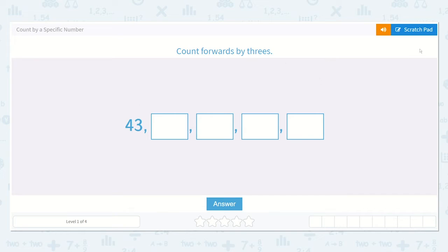count forward by threes. So we start at 43, and we're going to count forward by threes. So we're going to add three to this number. Sometimes it helps to draw three dots to help us count on. 43, 44, 45, 46.